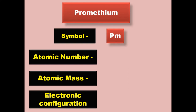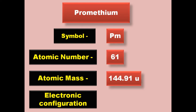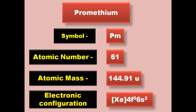Promethium has symbol Pm, atomic number 61, atomic mass 144.91, electronic configuration [Xe] 4f5 6s2. Promethium is a lanthanide and exists in solid form at room temperature.